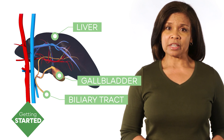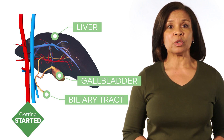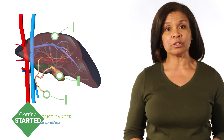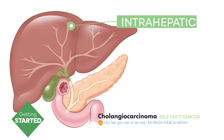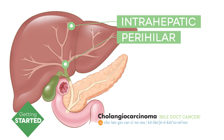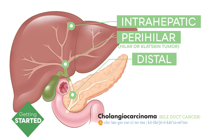Biliary tract cancers are divided into subtypes based on the location of the tumor within the liver. Intrahepatic cholangiocarcinomas originate in the small bile ducts within the liver. Perihilar cholangiocarcinomas, also known as Klatskin tumors, form at the meeting point of the major bile ducts that drain out of the liver. Distal cholangiocarcinomas originate in the large bile duct outside of the liver. Gallbladder cancers form in the gallbladder.